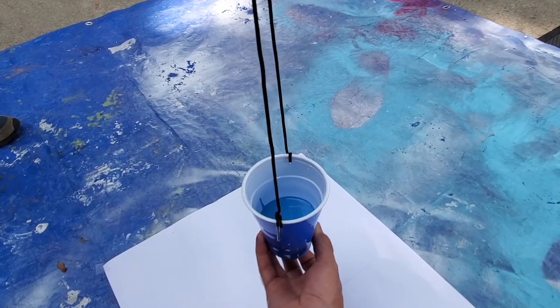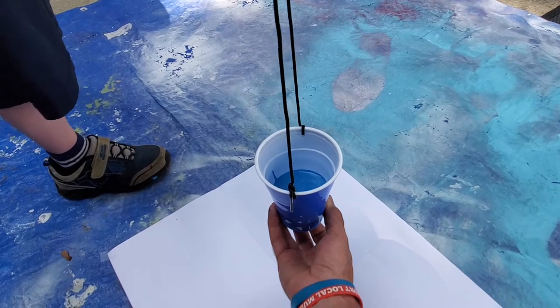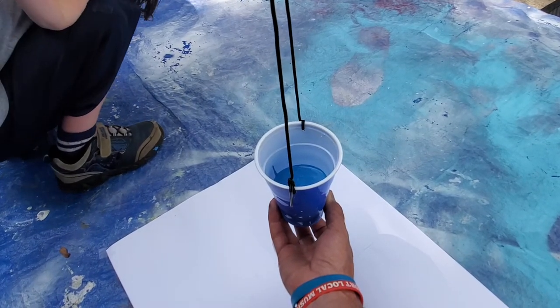Okay, so we've got our paint and water mixture in the cup. I'm holding the hole on the bottom with my finger. I made a hole with a small screwdriver, but you can use a pencil.